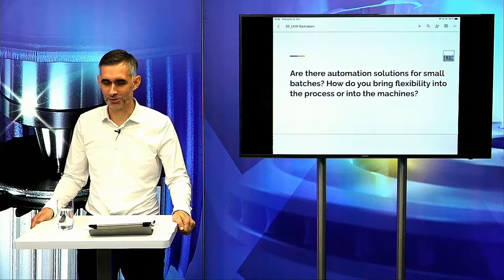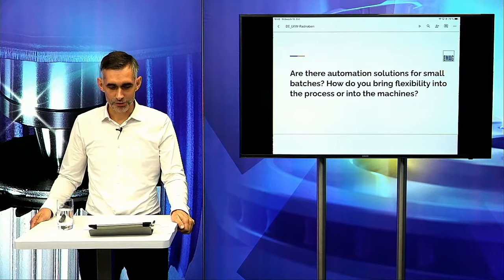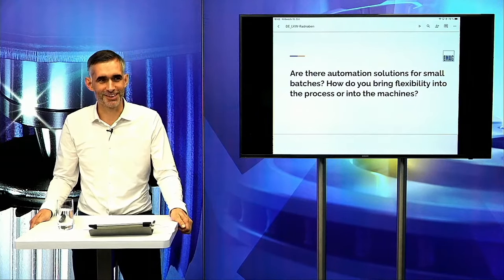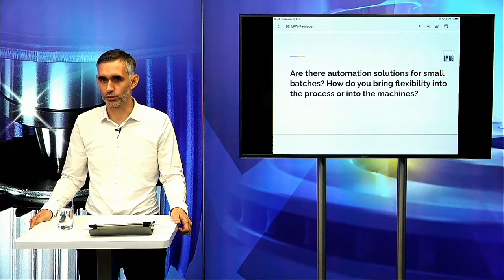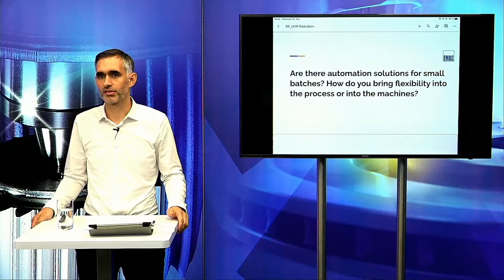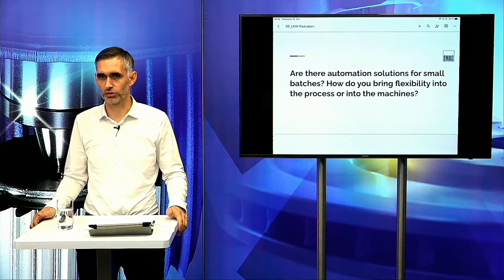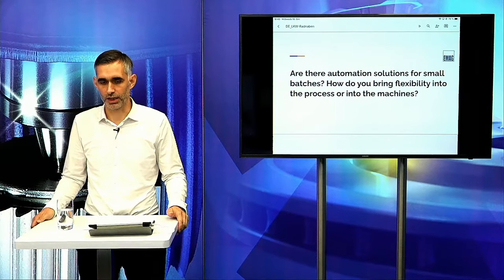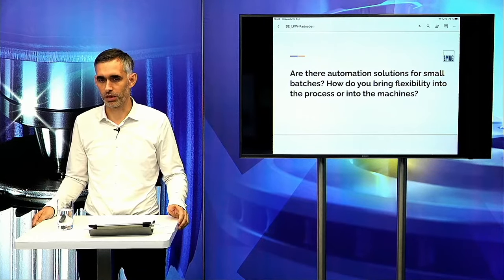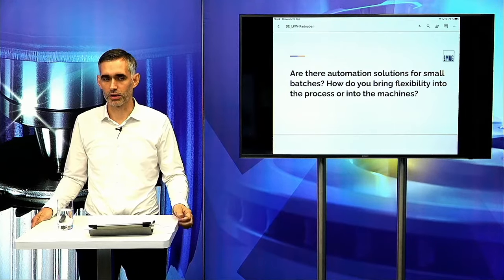We have the next question: Are there automation solutions for small batches? How do you bring flexibility into the process? The robot is a very flexible tool for part handling. If pick-and-place positions change because workpieces change, it's only a question of teaching new positions. We also need to consider the feed-in concept suitable for different parts — our experience helps here. The controller needs to know which parts are fed in: the simplest way is the operator chooses on the HMI, or we can use RFID information on a carrier fed into the machine.